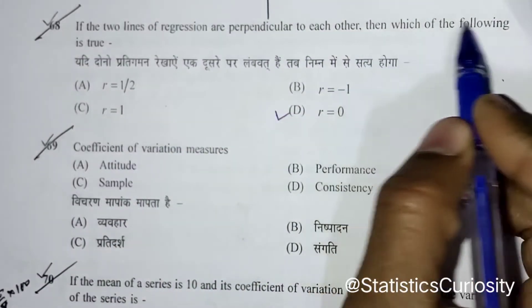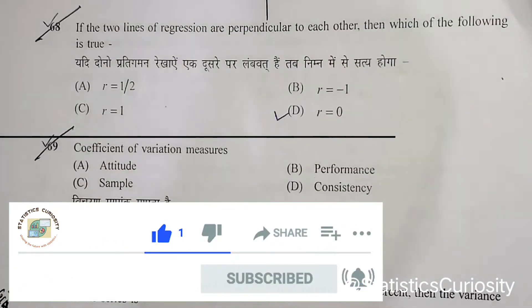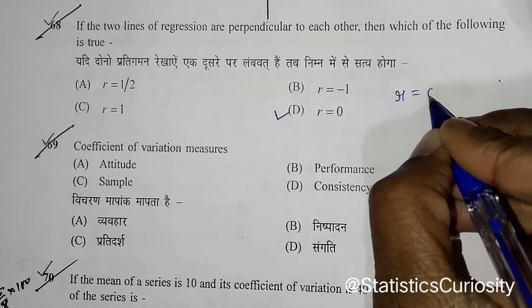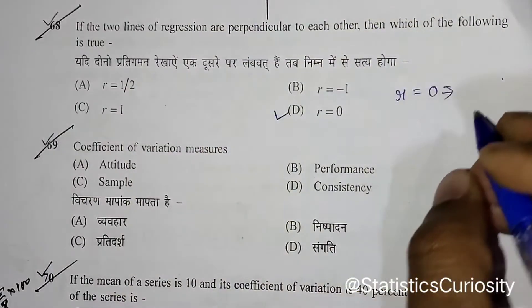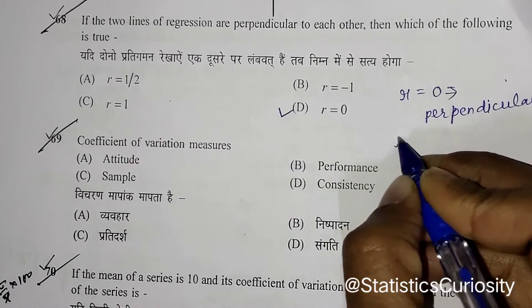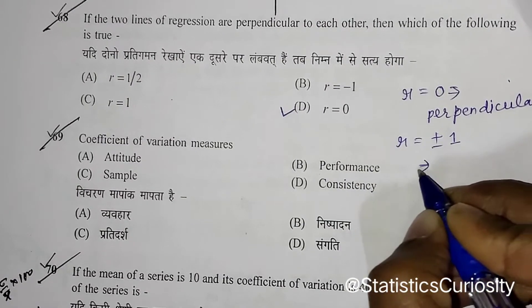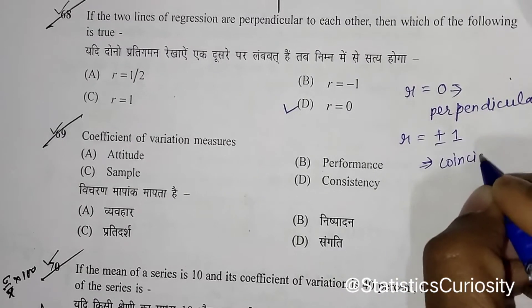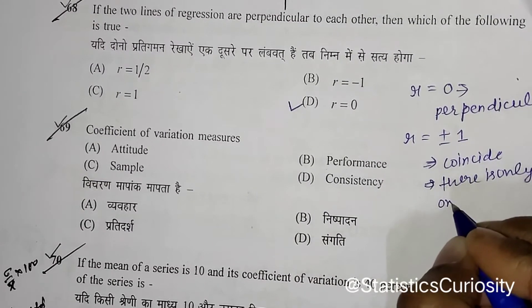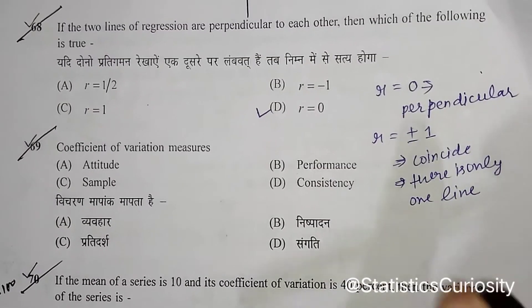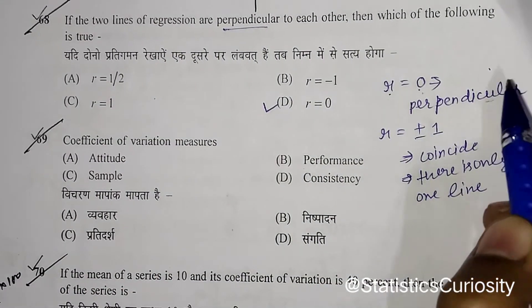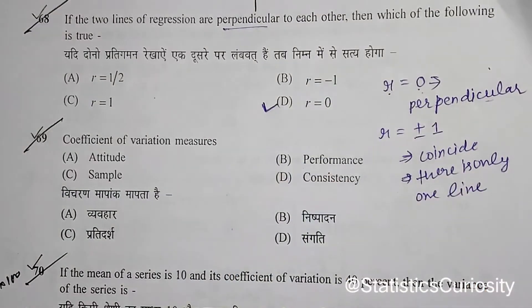Next question: if the two lines of regression are perpendicular to each other, which of the following is true? You need to remember two results: if the correlation coefficient r = 0, the two regression lines are perpendicular. If r = ±1, the two lines coincide — there is only one line. Since the question states the lines are perpendicular, the correct option is r = 0.